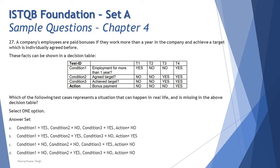These facts can be shown in the decision table given to you, which has four tests accumulated together. From the technique itself, when you have three conditions there will be eight possible combinations, but sometimes we simplify or break down the table so that you don't have to test all unwanted combinations which may not be realistic. The question asks which test case represents a situation that can happen in real life and is missing in the decision table.